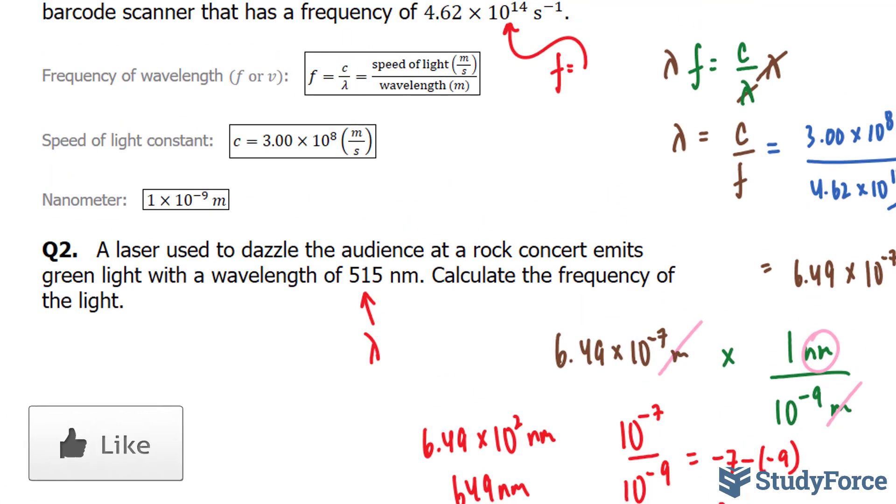Now the speed of light is in meters per second, whereas this is in nanometers. They have to both be the same in order for us to find the frequency using this formula. So let me write that down first. Frequency is equal to 3.00 times 10 to the power of 8 meters per second.